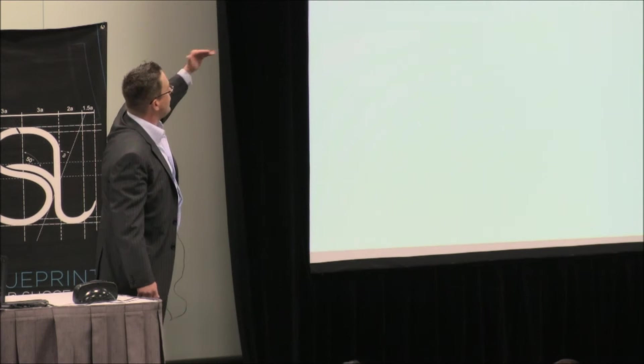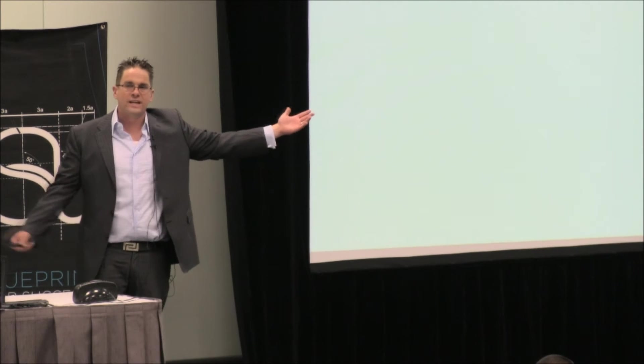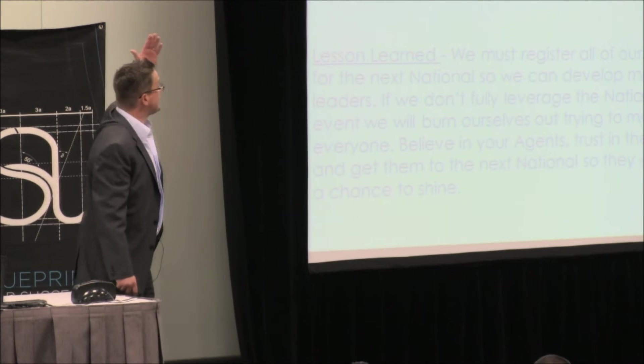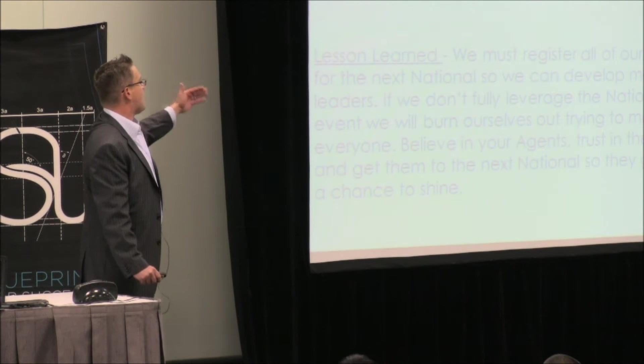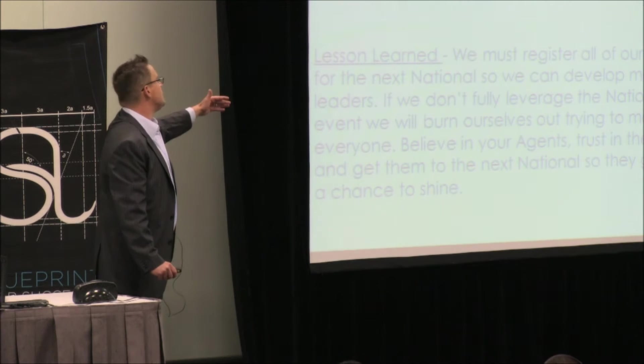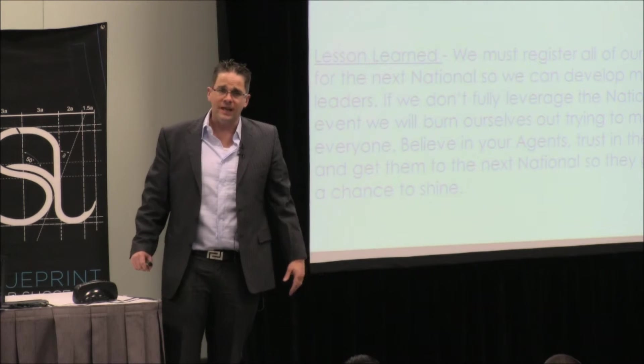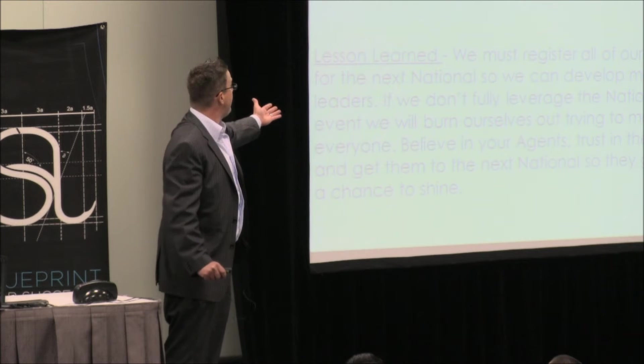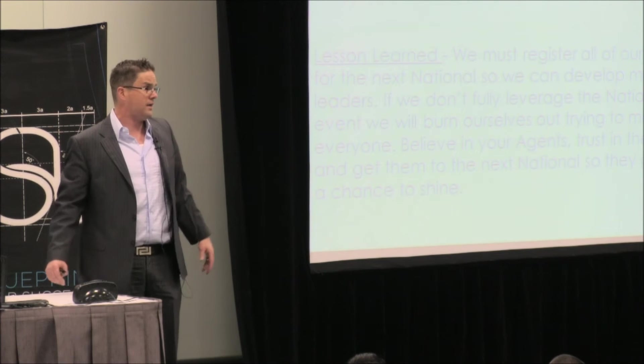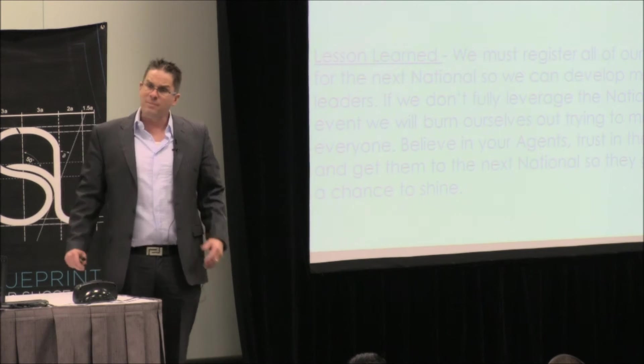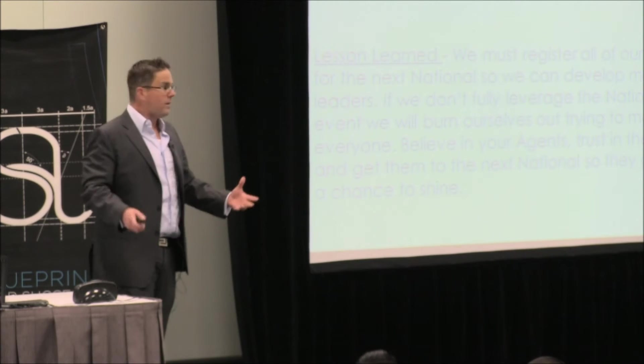So here's what we know for sure. When the lead goose gets tired, it rotates back into formation and another goose flies in the point position. See how smart they are? What does that mean? Here's what I learned from that. We must register all of our agents for the next national so we can develop more leaders. If we don't fully leverage the national event, we will burn ourselves out trying to motivate everybody. Believe in your agents, trust in them and get them to the next national so they get a chance to shine. How beautiful is that? If you're not getting people to the event, that's wild. You want to develop leaders. You're going to run yourself in the ground going out there trying to motivate everybody, trying to get everybody all fired up. I'm not trying to motivate people. I'm going to bring them to the land of motivation, the national convention. Do you see how smart that is? That's all we've got to do right now.